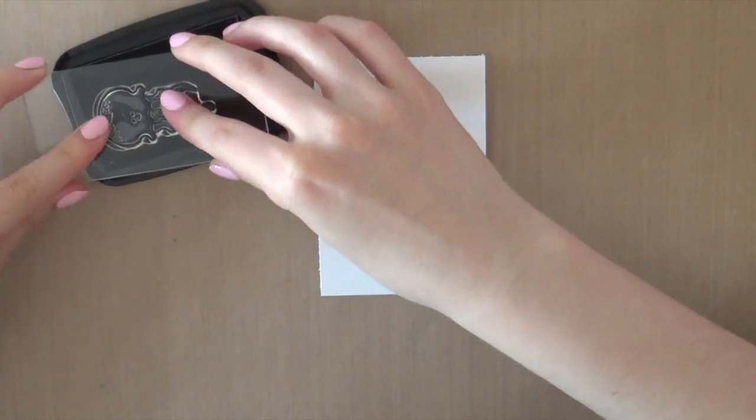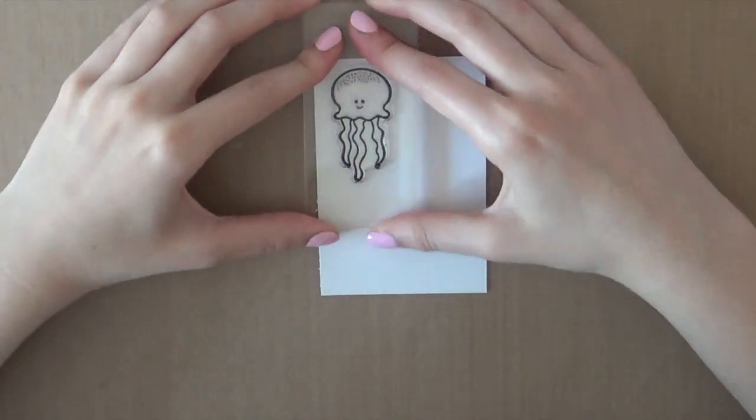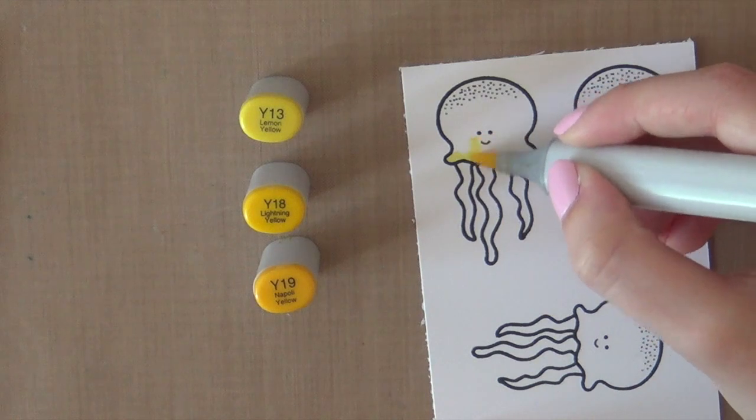So first I am stamping the jellyfish onto some Simon Says Stamp ultra heavyweight cardstock using Memento Tuxedo Black ink and I'm going to stamp that three times.